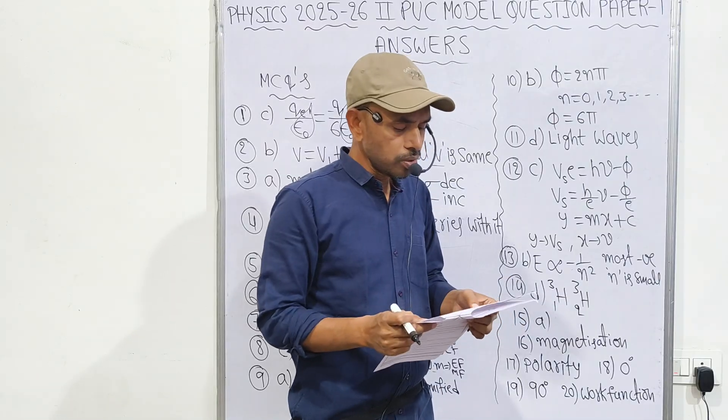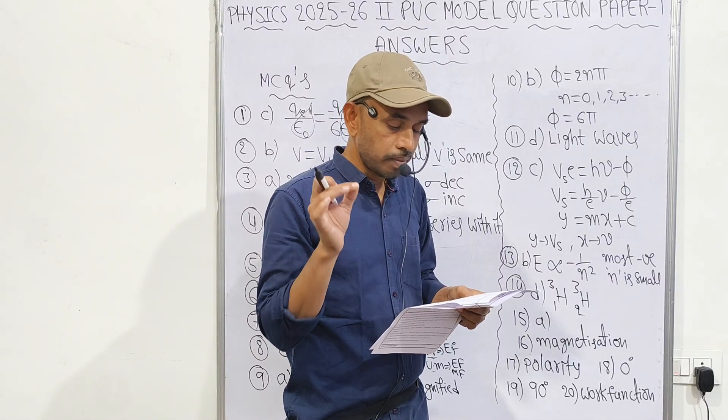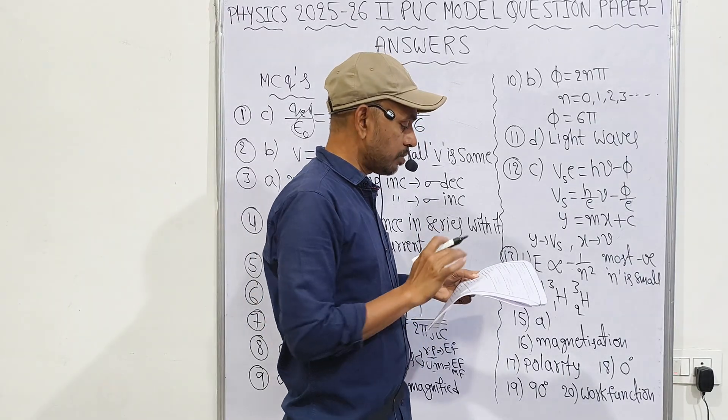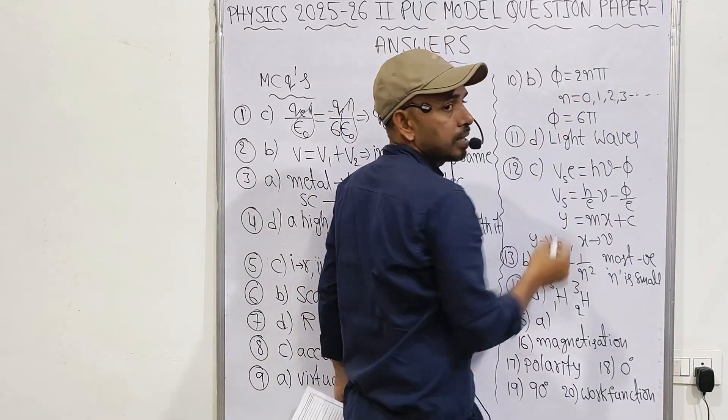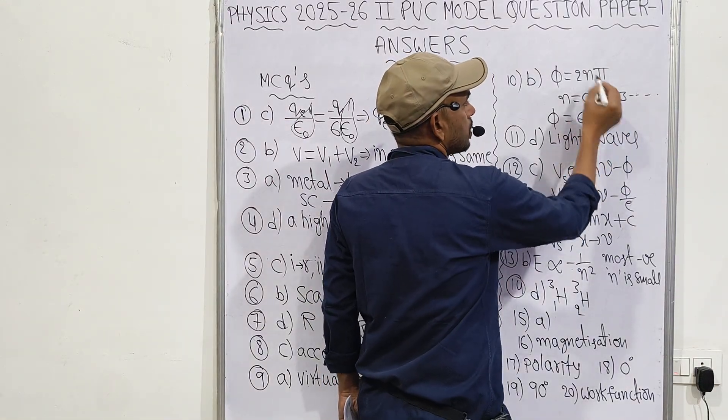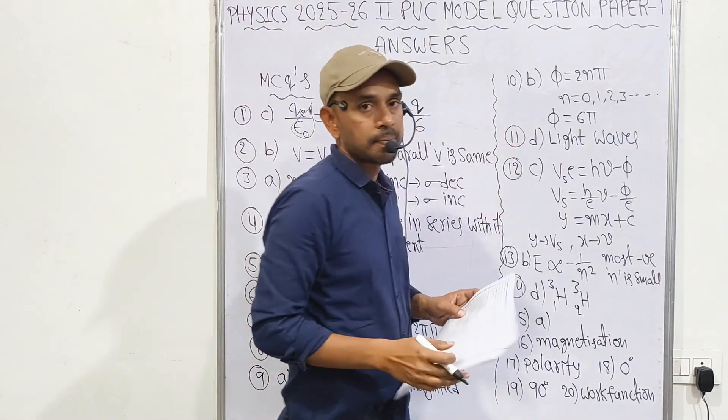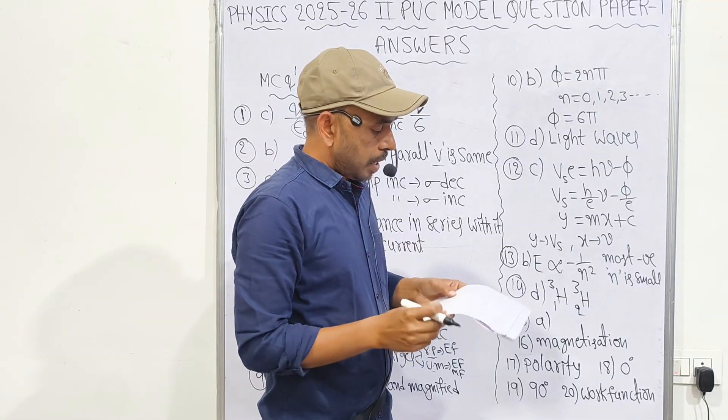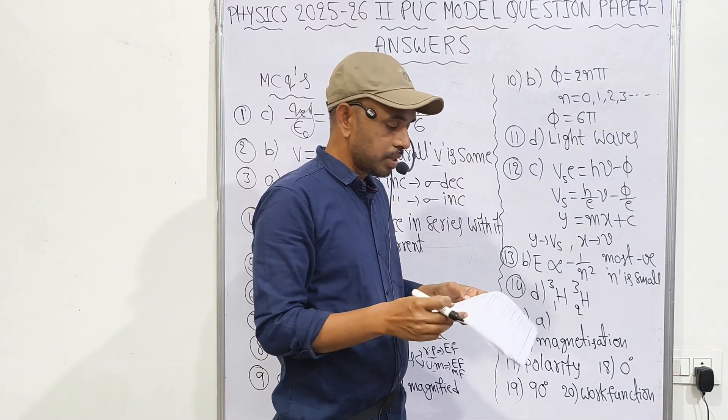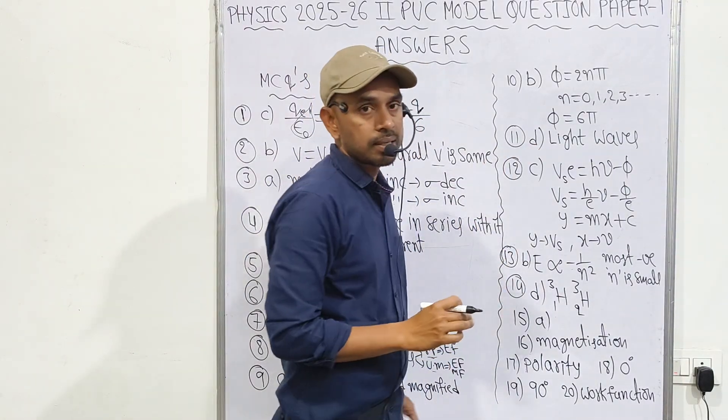Tenth one: two waves coming from two coherent sources developed at a point to give maximum intensity. The phase difference between the superposing waves may be. Maximum intensity means phi equals n pi condition. If you substitute n equals 0 gives 0, n equals 1 gives 2 pi, n equals 2 gives 4 pi, n equals 3 gives 6 pi. Even multiple, only one option is 6 pi. Option B is correct. Next, identify the correct statement. Light waves exhibit both diffraction and polarization, interference also. That's why D option is correct.